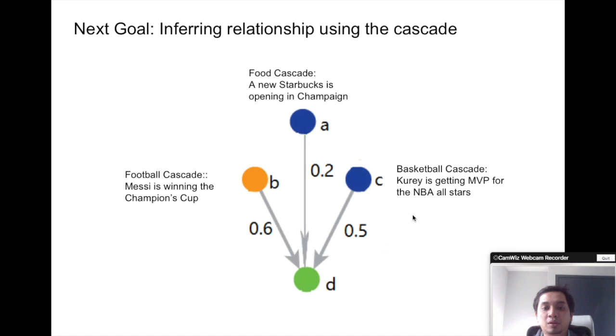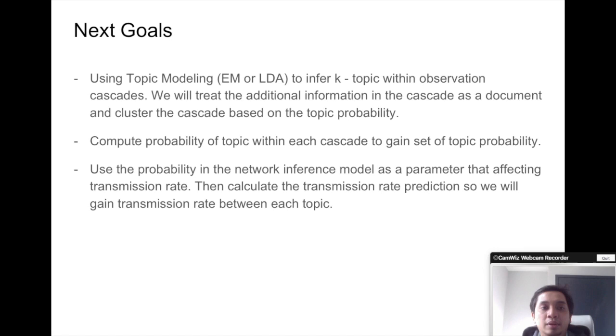For example, this one. From B and C, there is a cascade about sport and it's propagated faster. While from A, there is a topic about food, which is slower, having a lower relation within A and D.